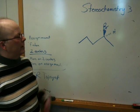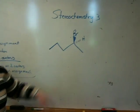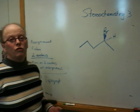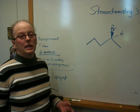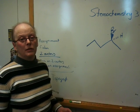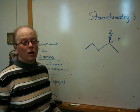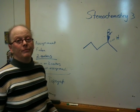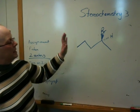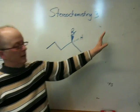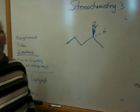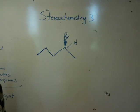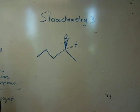At the end of Stereochemistry 2, we were looking at this molecule, and we had established that this molecule was chiral. I told you that any molecule that has an asymmetric atom in it, specifically an asymmetric carbon — which is a carbon with four different groups — is chiral. I could draw another molecule that is the mirror image of this molecule, and that molecule will be its enantiomer, and it is a different molecule.